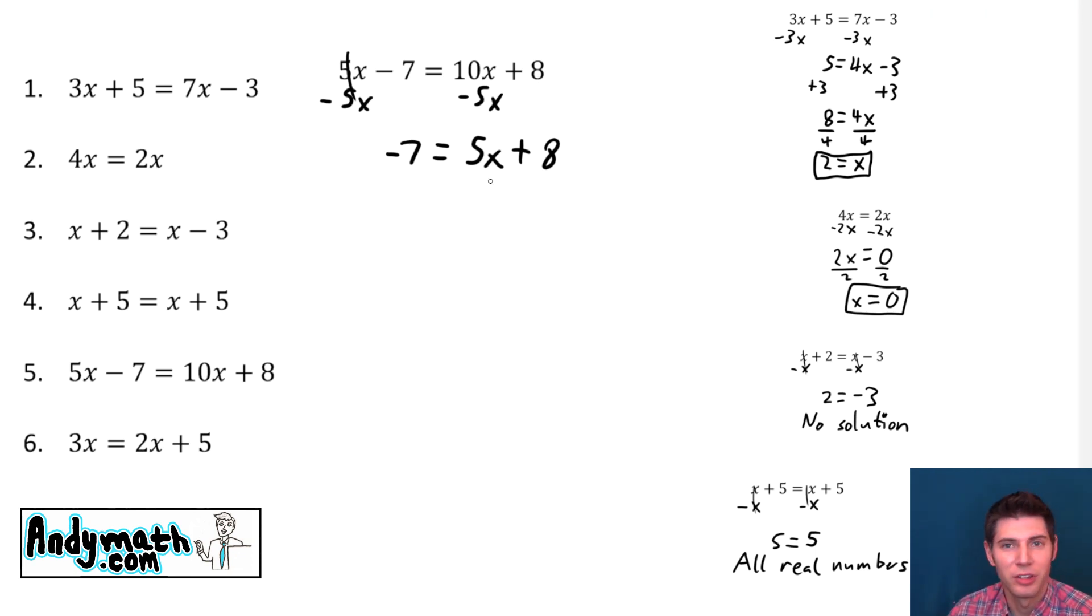Now that we have all the x's to one side, we want to get this x by itself. So we're going to subtract 8 from both sides. These cancel. Negative 7 minus 8 is negative 15 equals 5x. Now the last thing stopping the x from being by itself is this times 5. So to undo a times 5, we're going to divide by 5. Those cancel. So now we have x equals negative 15 divided by 5, which is negative 3. Dividing a negative by a positive gives you a negative. This is the answer. x equals negative 3.